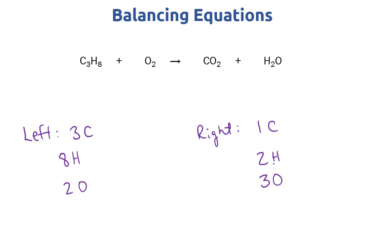So how do we decide where to start? We should think about where not to start. We want to avoid starting with elements that appear in more than one molecule on each side. For example, oxygen appears in one molecule on the left in O2, but it appears in two molecules on the right side. If we change one of those coefficients, it affects more than one molecule at a time. Carbon only appears once on the left and once on the right, and hydrogen only appears in one molecule on each side, so let's start with those.